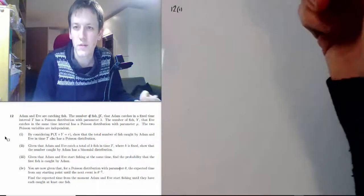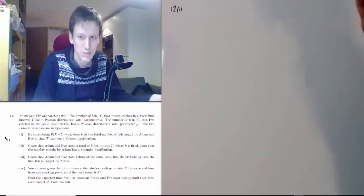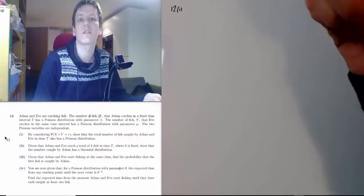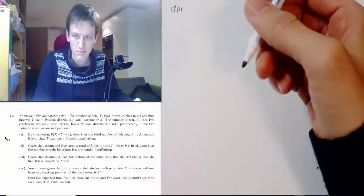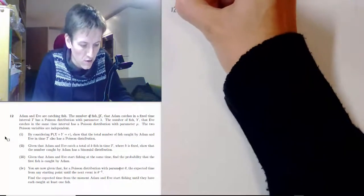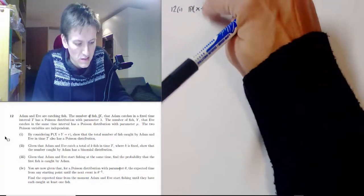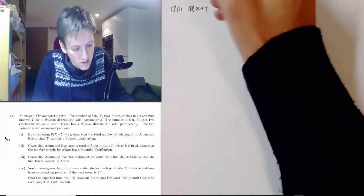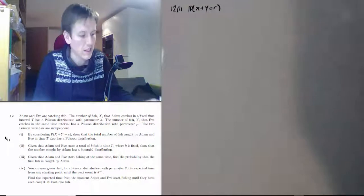We probably know that when you add two Poisson distributions together you get a Poisson distribution with a combined rate, so we're expecting a Poisson distribution with rate lambda plus mu. But we need to really prove that by doing what the question says. So let's think about how the event X plus Y equals r could come about.